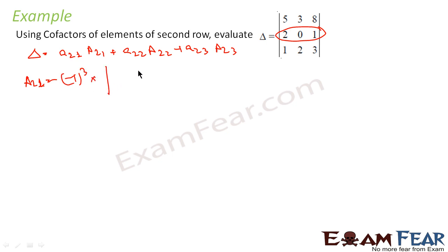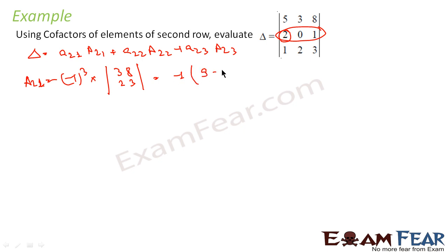Cofactor A21 is (-1)^(2+1) into M21. To find M21: take this element, ignore this row and this column, you are left with 3, 8, 2, and 3. That is minus of (3 into 3 = 9) minus (8 into 2 = 16), which becomes +7.